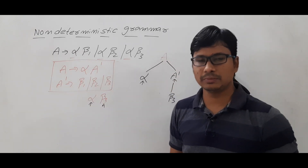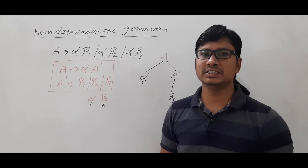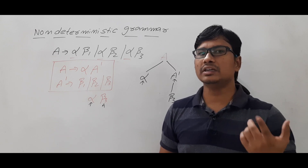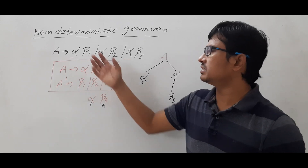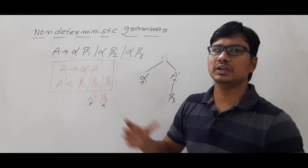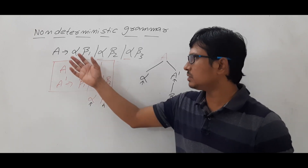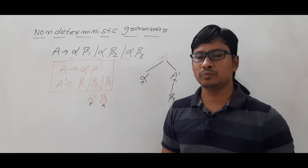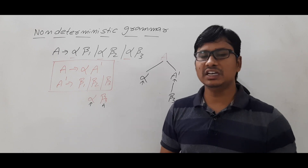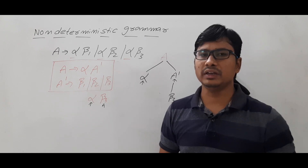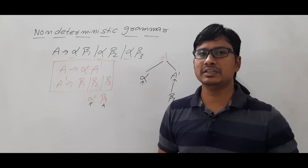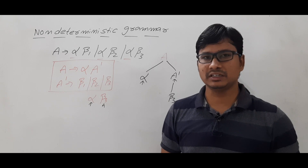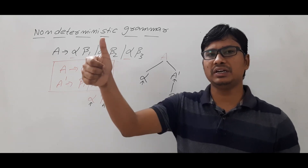I hope you have understood what is a non-deterministic grammar, what is the problem with non-deterministic grammar, and how to convert non-deterministic grammar to equivalent deterministic grammar. Some textbooks also call this concept left factoring. Please note down these points. If you still have doubts, don't worry — in the next video I will discuss a few examples of how to convert non-deterministic grammar to equivalent deterministic grammar. Thank you for watching, have a nice day.